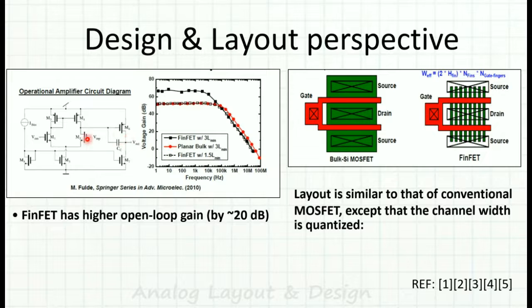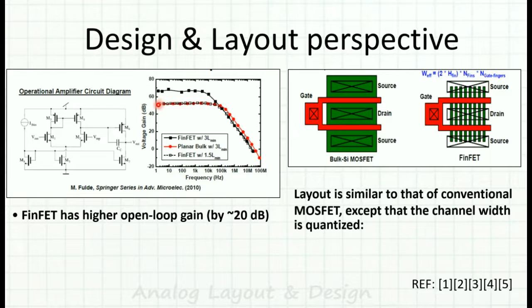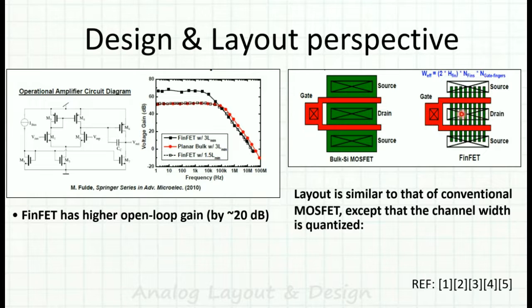Comparing design and layout of FinFET versus planar MOSFET: for a similar op-amp circuit, implementing it in FinFET gives a higher open-loop gain of around 20 dB — for example going from about 50 dB to about 70 dB. In the layout, bulk MOSFET shows source, drain, and gate in the conventional planar way; FinFET layout looks similar except the fins are the channel elements and the effective channel width is defined by the number of fins.